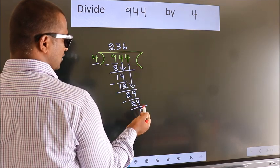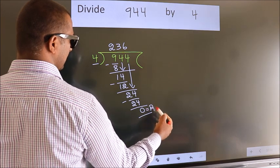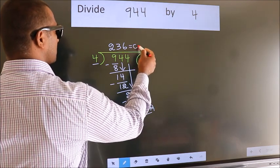No more numbers to bring down. So we stop here. This is our remainder. This is our quotient.